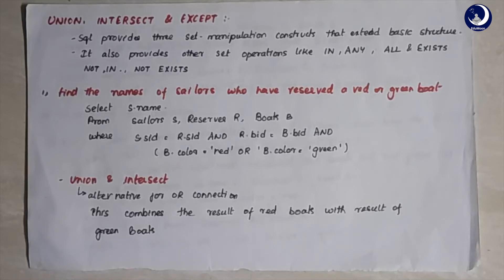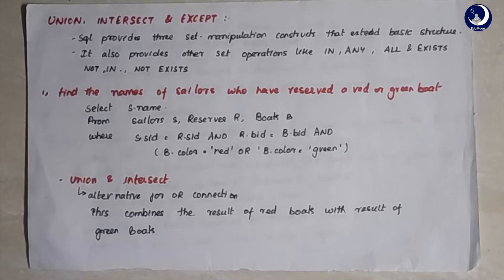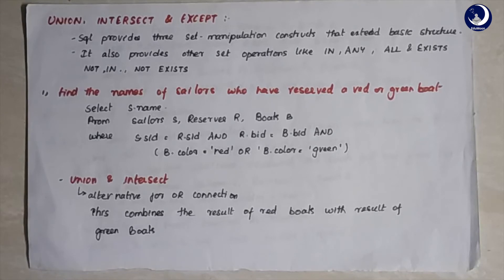Now, what if we want sailors who reserved both a red boat and a green boat? We might simply replace the OR with AND, but that doesn't work in SQL. In an AND condition, both conditions must be true simultaneously. However, by our boat instance, a boat can only be colored in one color - so no single boat can be both red and green. This is where union comes into picture.